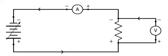By varying the potential difference of the source and making simultaneous measurements of current and potential difference, we can find the resistance.